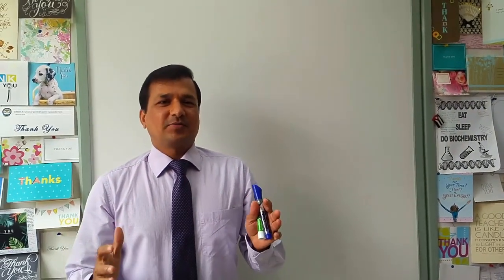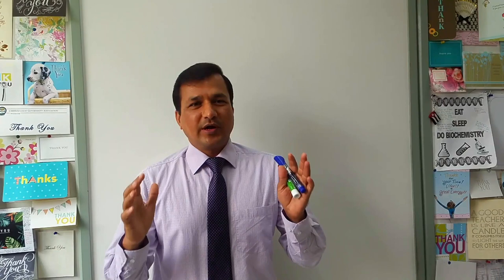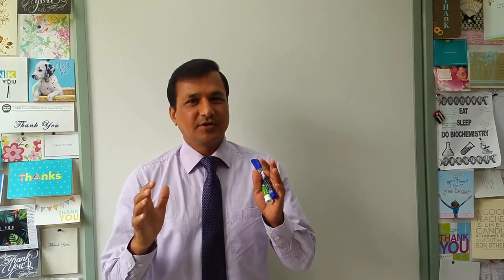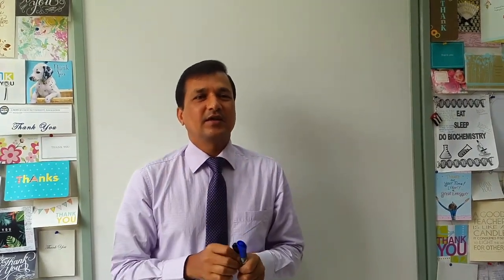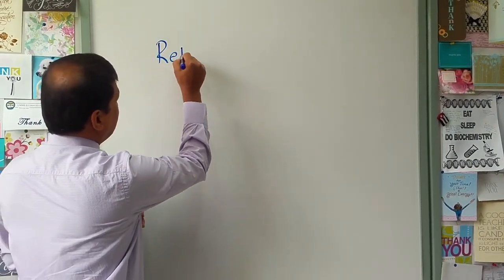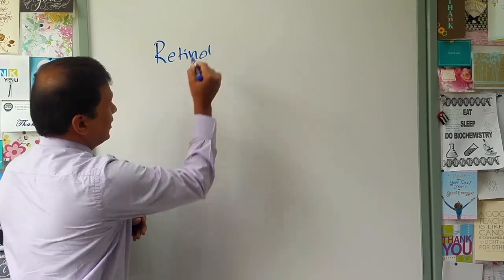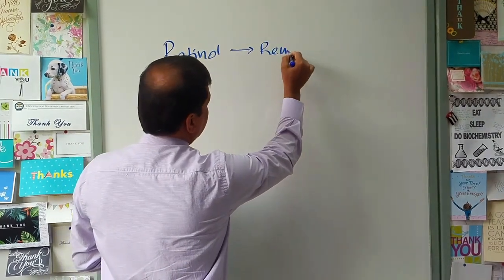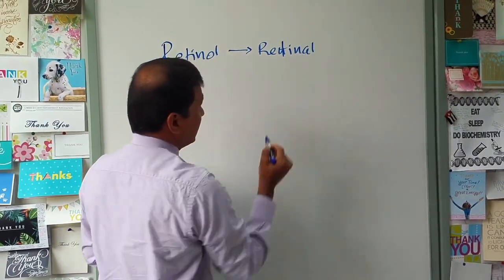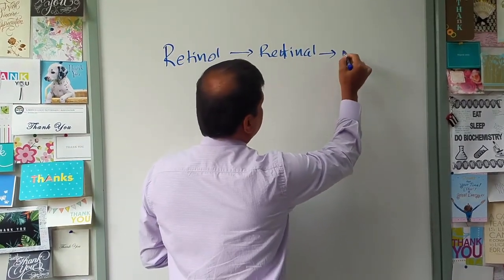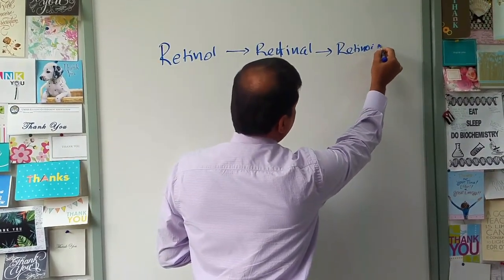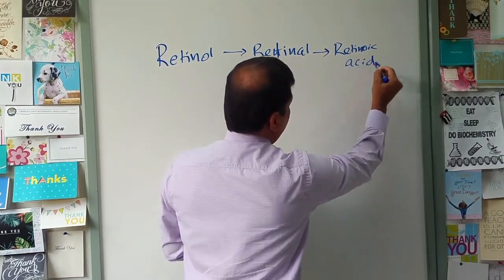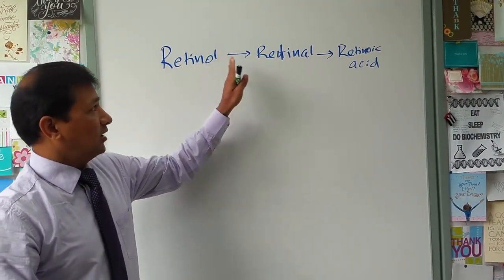Today I'll be briefly explaining all the high yield points about vitamin A. Vitamin A has three forms: retinol, which is the alcohol form; retinaldehyde, which is the aldehyde form; and retinoic acid, which is the acidic form. The alcohol form can be oxidized into the aldehyde form, and retinaldehyde can be further oxidized into retinoic acid.